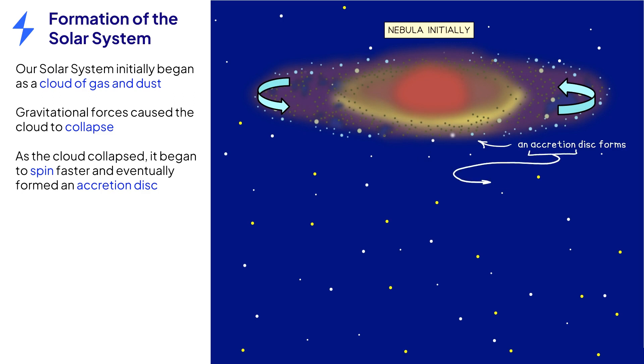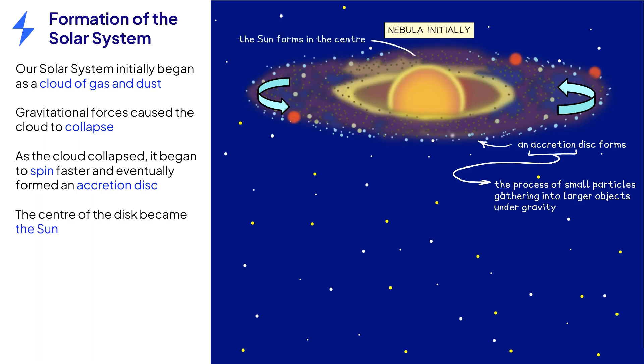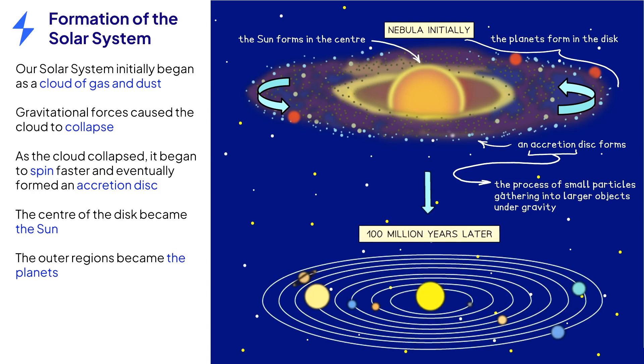Accretion simply describes the process of small particles gathering into larger objects under gravity. Most of the dust and gas remained in the centre to form the Sun. The dust and gas in the accretion disk formed the planets. The whole process of forming a solar system takes at least 100 million years.